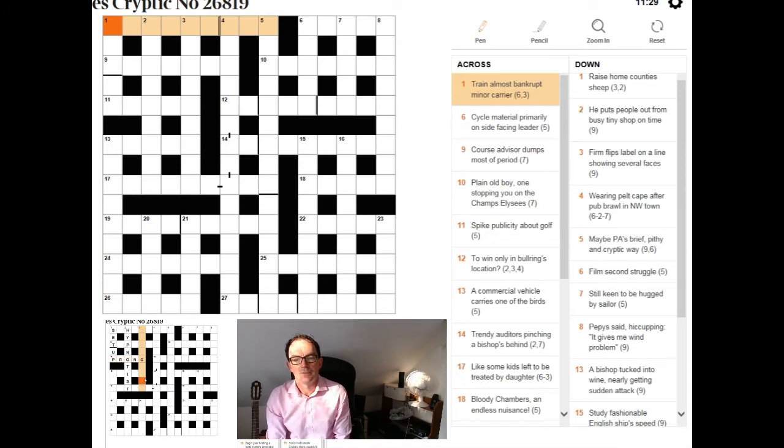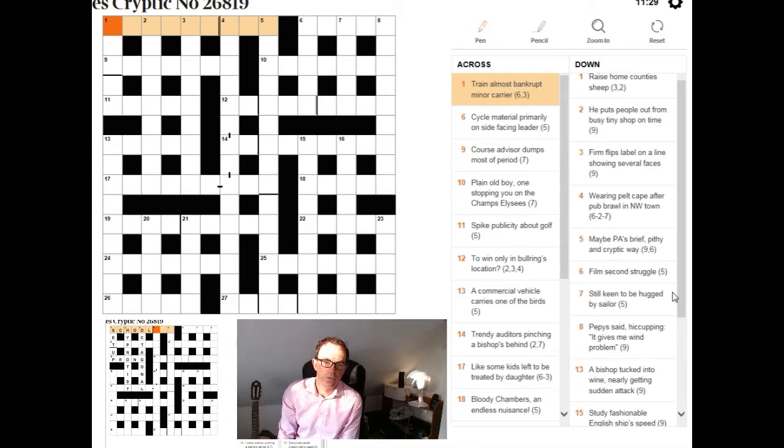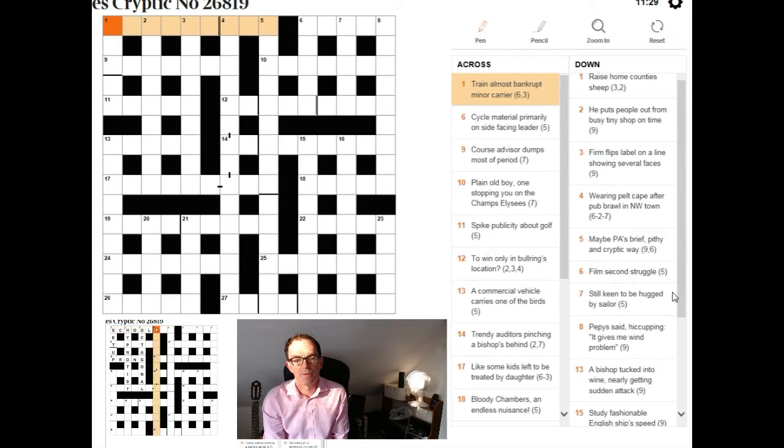If you see for example 14 across here where we've got trendy auditors pinching a bishops behind, 2-7. There are only a few possibilities for that first word. The trendy in the clue should immediately be making you think of 'in'. If something's in it's trendy. And we mentioned a couple of days ago in the blog that bishop could be B but it could also be RR for right reverend.